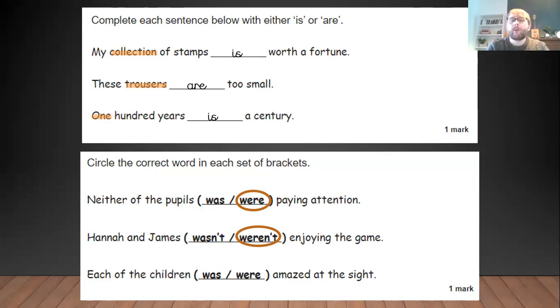Each of the children was amazed. Because it's referring to each of them, one of them at a time. That child was and that child was. Those children were. So each of the children was amazed at the sight.